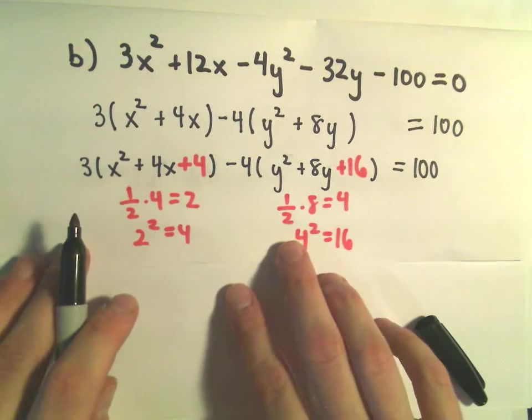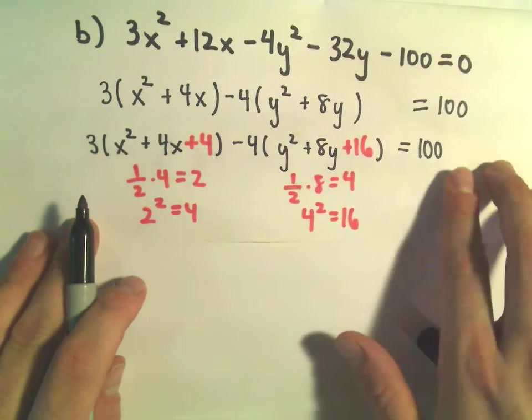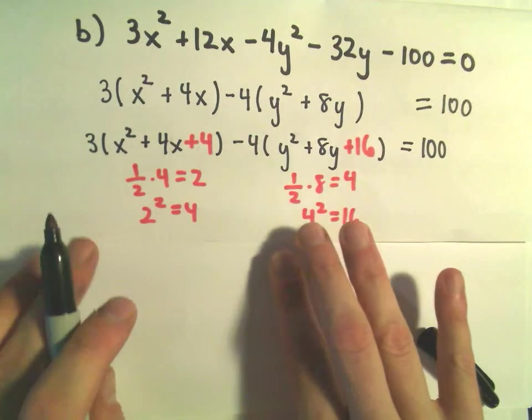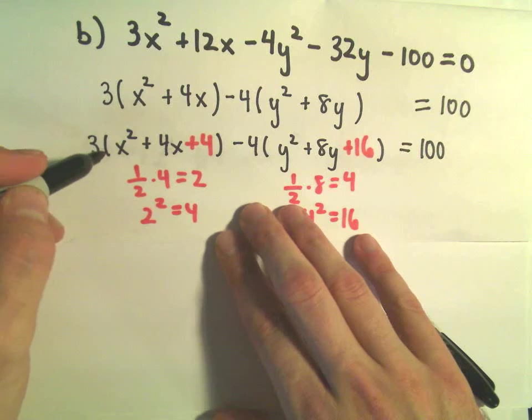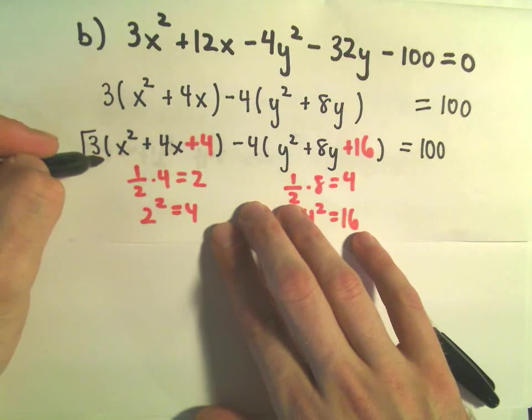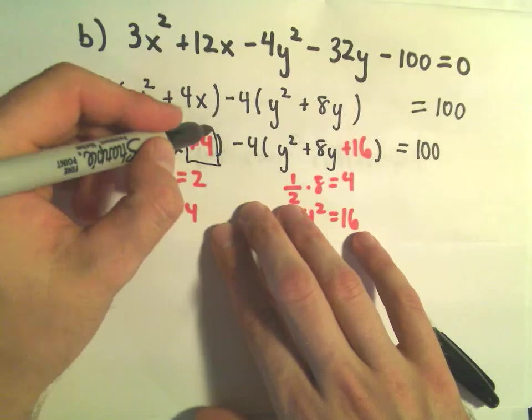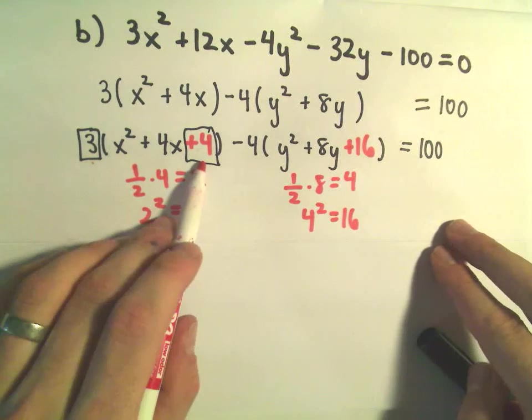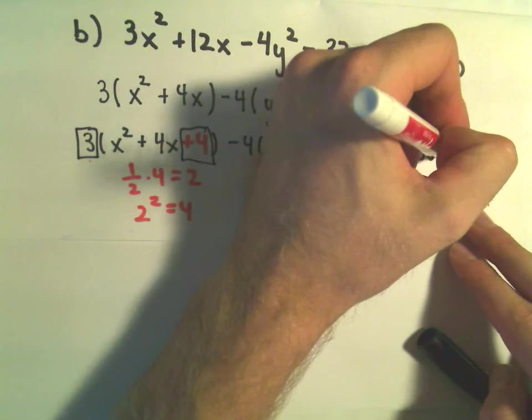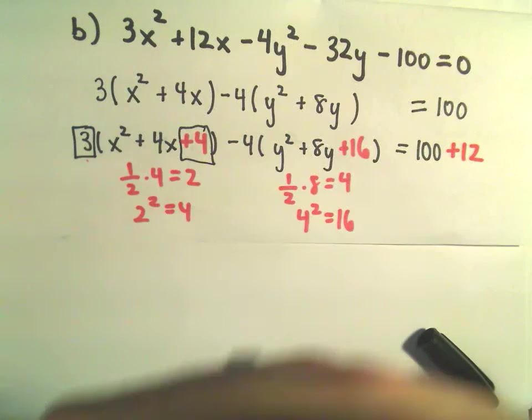Okay, so now this is the tricky part because we have to manipulate the right side as well. Notice if you multiply the positive 3 times the positive 4, so if we take 3 times our 4, we're going to get a positive 12. So that means we really added 12 to the left side. So that means I'm going to add 12 to the right side as well.